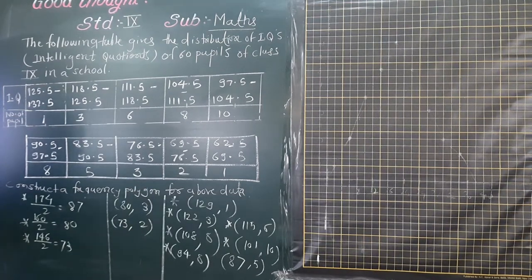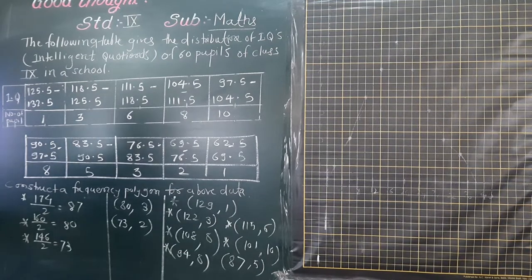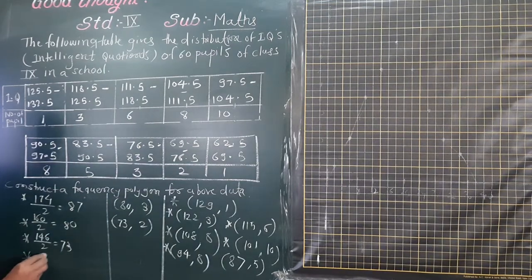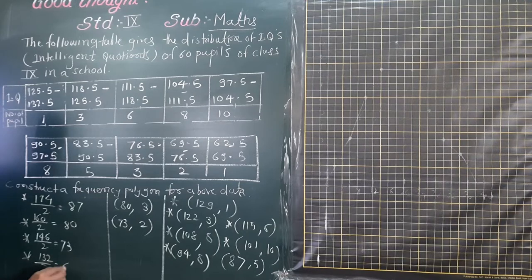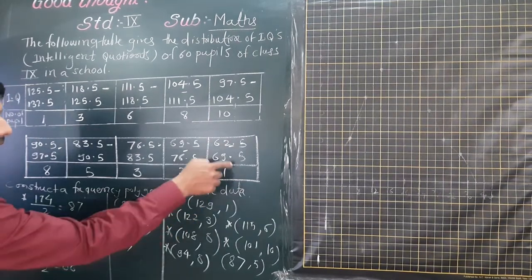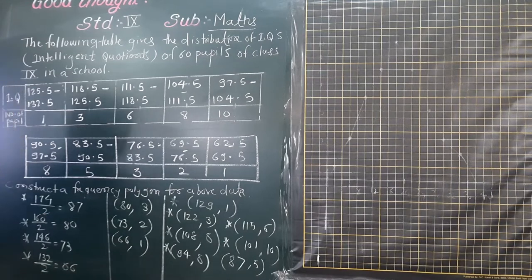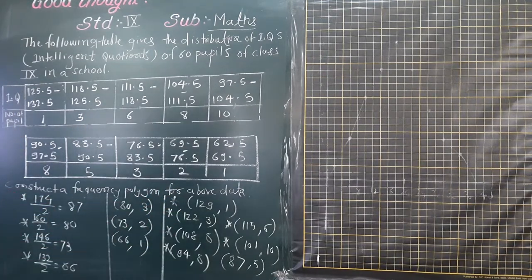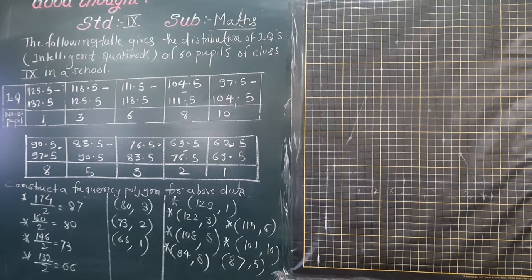And the last interval is 62.5 plus 69.5. Their sum is 132 divided by 2, which equals 66. So the last plotting point is 66 and its frequency is 1. So these are all the plotting points. These points we need to show on the graph.